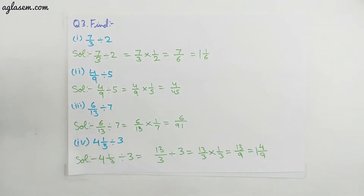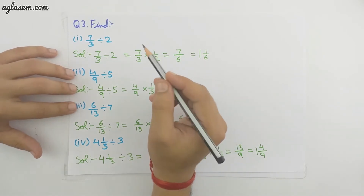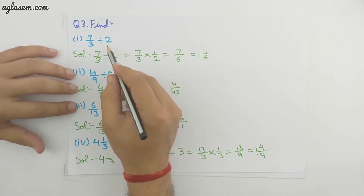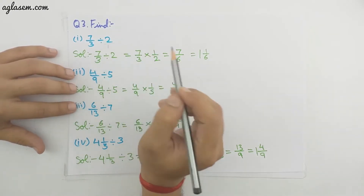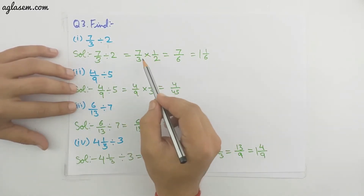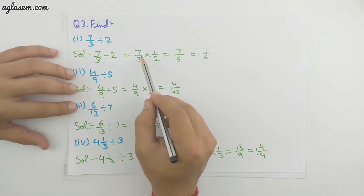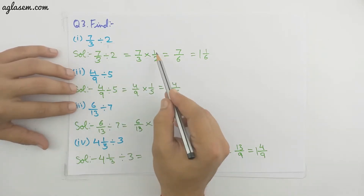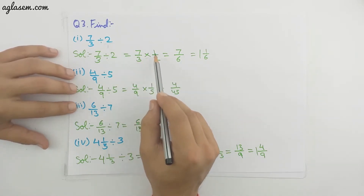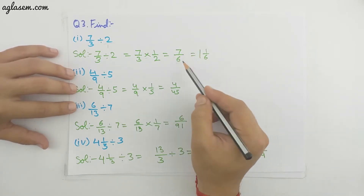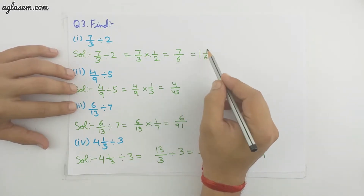Moving to the third question — we have to divide fractions by whole numbers. First part: 7/3 divided by 2. Since 2 is a whole number, we write it as 2/1. The divide sign changes to multiplication and 2/1 becomes 1/2. Multiplying 7/3 by 1/2 gives 7/6, which is an improper fraction. We change it to the mixed fraction 1 whole 1/6.